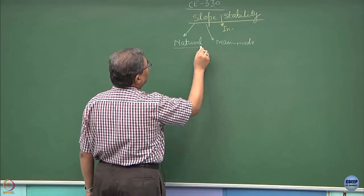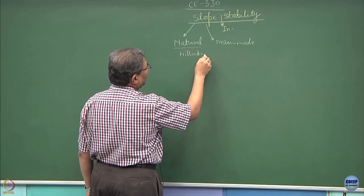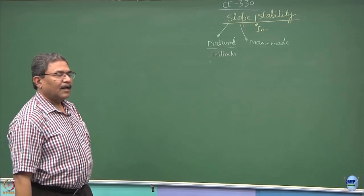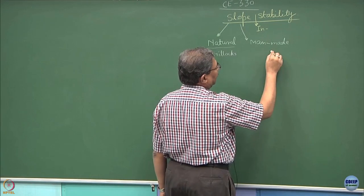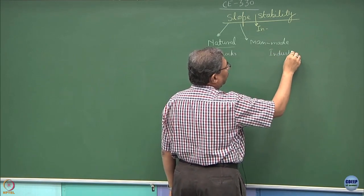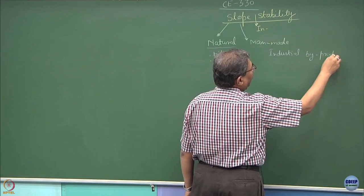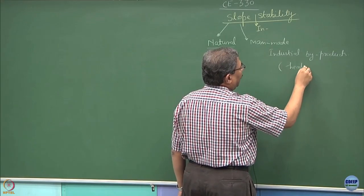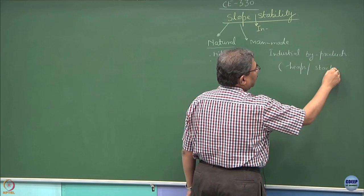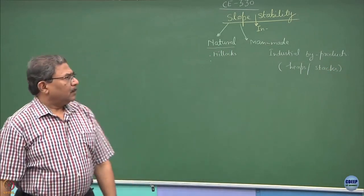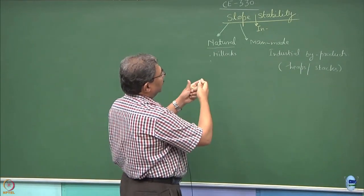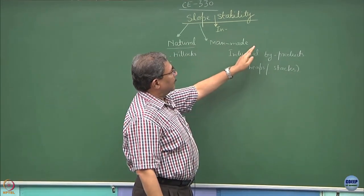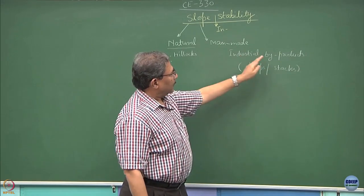Naturally occurring slopes are hillocks — they could be huge or small. Manmade slopes would be, as we were talking about, industrial byproducts. We call them heaps or sometimes stacks. Given a chance, I would like to study the stability of slopes and instability of manmade systems which come out of industrial byproducts. It could be a generalized situation.